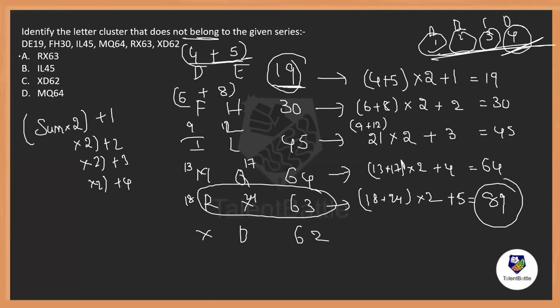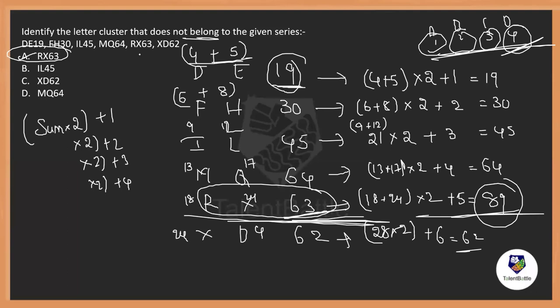So, which is the odd one, option A. Even let us check this also. 24 and 4. 24 plus 4 is 28. 28 into 2 is 56. 56 plus 6 is 62. Satisfied. Everything got satisfied apart from this one. So, this is supposed to be 89 actually, not 63. So, which is the odd one. Option A is the odd one.